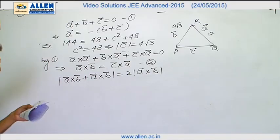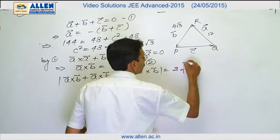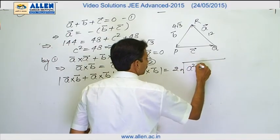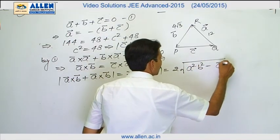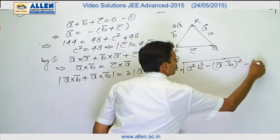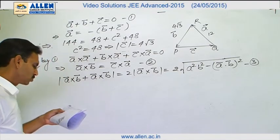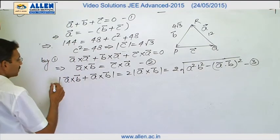Now to find the value of a cross b, I will use Lagrange's identity. It is 2 times square root of a square b square minus a dot b whole square. Now I need a dot b which is also required in option d. So we will use the relation first again.